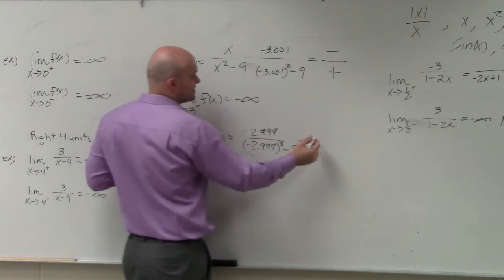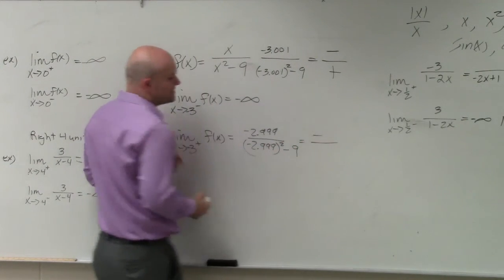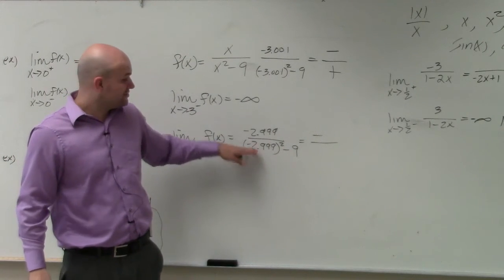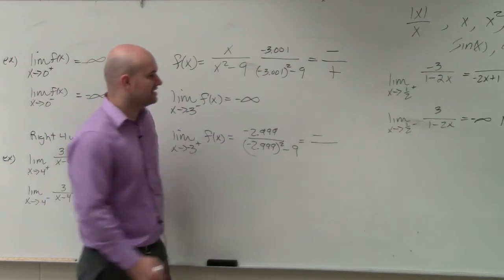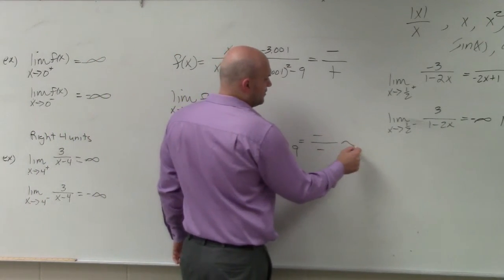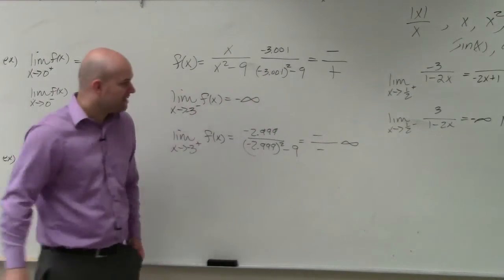Again, our numerator is negative. In our denominator, we have a number smaller than 3 squared. So a number smaller than negative 3 squared minus 9 is going to give us a negative, which will tell us it's going to go to positive infinity.